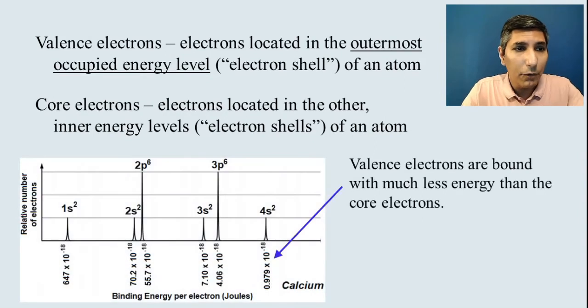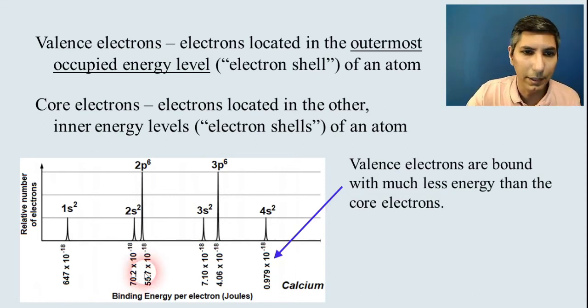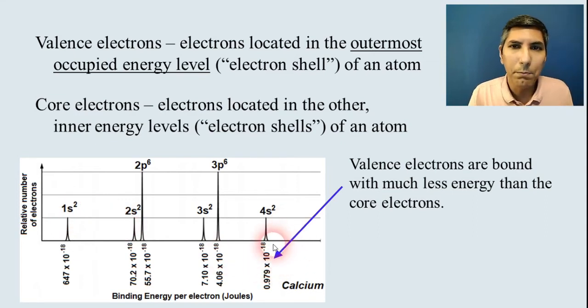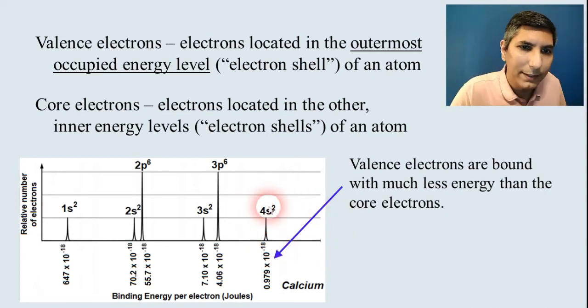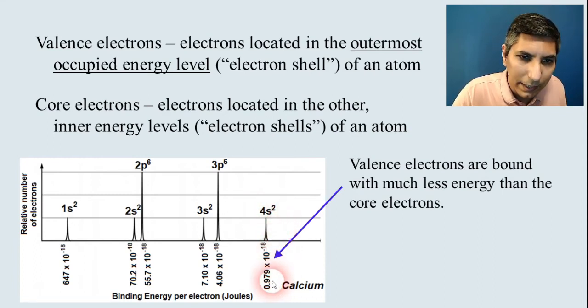Now, if we go back to our PES diagram that we looked at earlier in this unit, we can see that the valence electrons are bound much less tightly to the nucleus than the core electrons are. In fact, we know that the 4s electrons, these right here, those are your valence electrons.